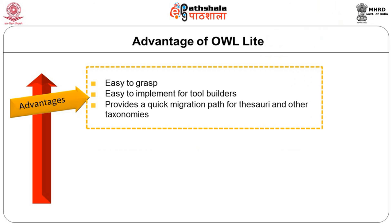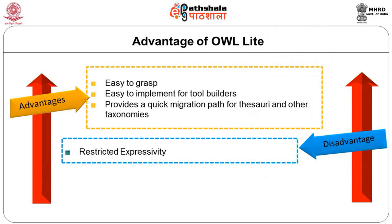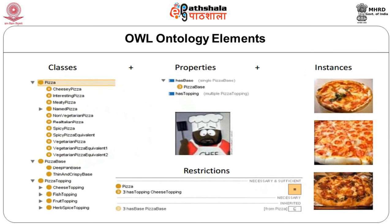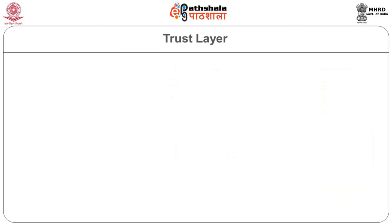If we want to migrate a thesaurus to OWL Lite it is straightforward since they are close to each other, but migrating to OWL DL requires a lot of manual work. OWL ontology consists of classes, properties, instances of classes, and relationships between instances. Mapping between DL and OWL: classes in OWL are concepts in DL; properties in OWL are roles in DL; instances in OWL are individuals in DL.